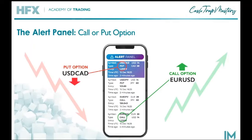Next, it identifies which trade direction to take. First is either a put option if you're predicting that the price will go down, or a call option if we predict that the price will go up. Each individual market idea will tell you to either place a put option or a call option, as you can see in the example of the euro to US dollar.